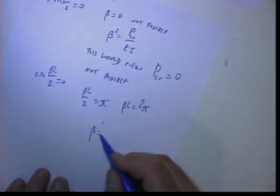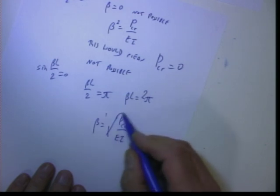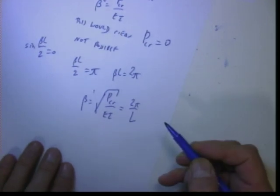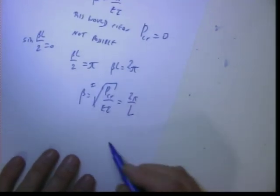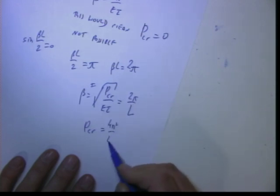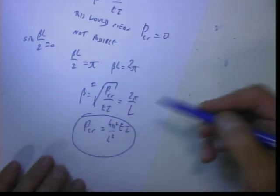Beta equals square root of p_critical divided by EI. This equals 2π over L. So from here, p_critical will be 4π² L² EI. So that is one result.